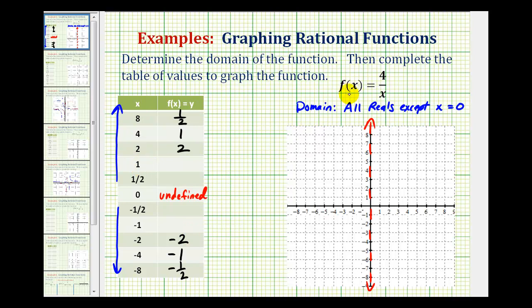If x is equal to 1, y is equal to 4 divided by 1, which is 4. And 4 divided by negative 1 would be negative 4. But notice when x is equal to 1 half, we would have f of x or y equal to 4 divided by 1 half. Remember dividing by a fraction is the same as multiplying by the reciprocal. This would be 4 times 2 over 1 or just 4 times 2, which is equal to 8. So when x is 1 half, y is 8. And when x is equal to negative 1 half, we would just have negative 8.